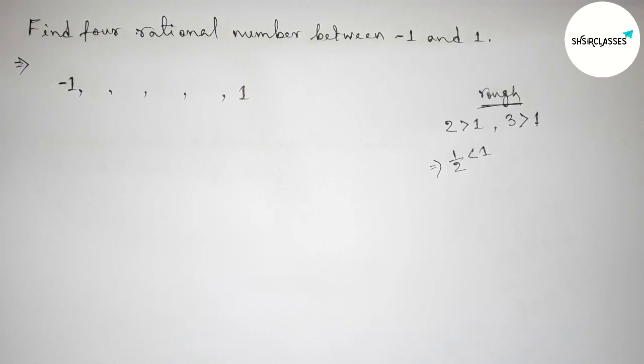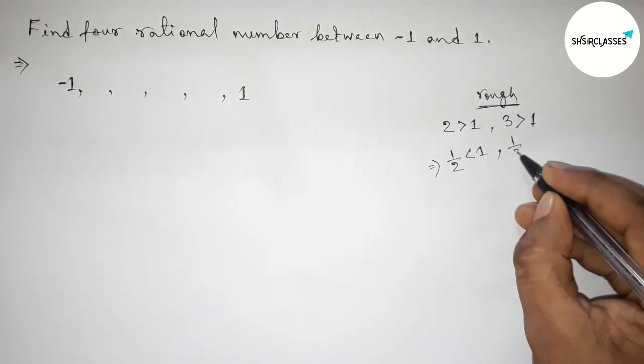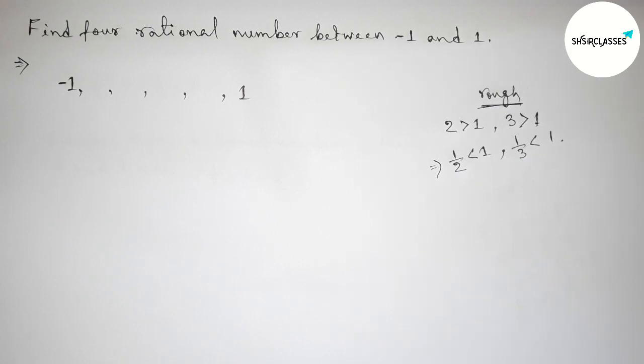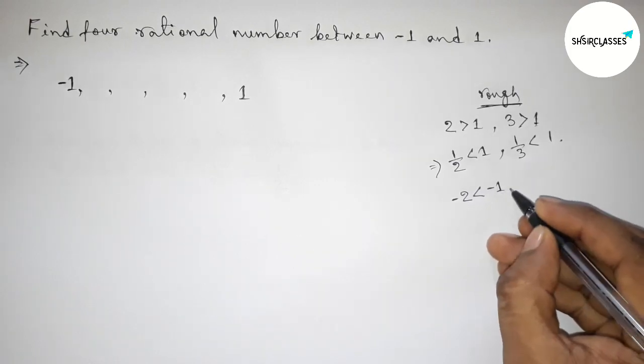And inverse of three, that is one by three, this is also always less than one. So these are two rational numbers. Similarly, we have to find another two rational numbers. So first of all, taking minus two, this is less than minus one, and minus three, less than minus one.